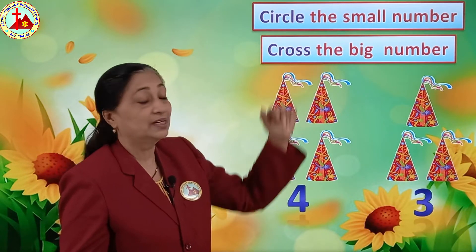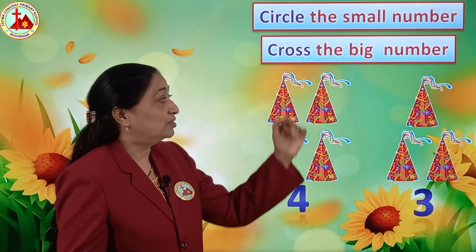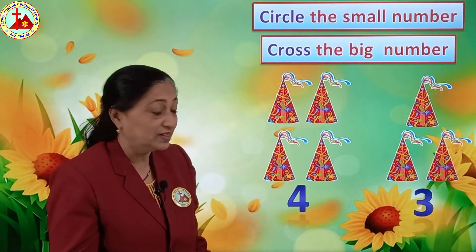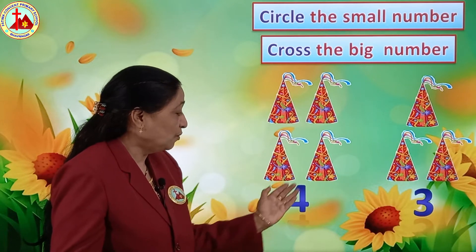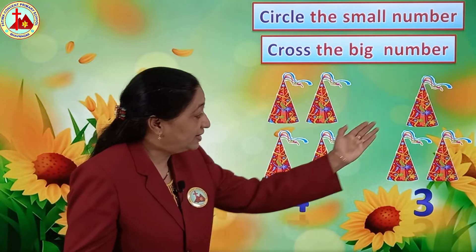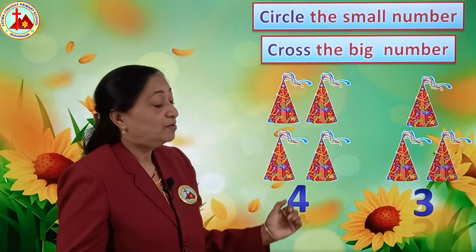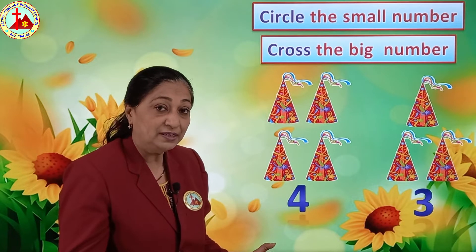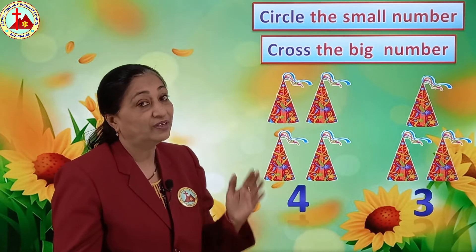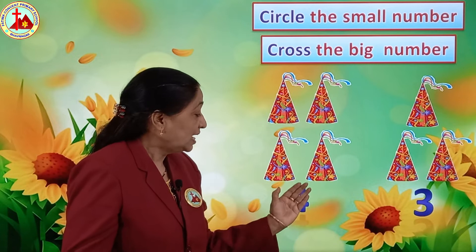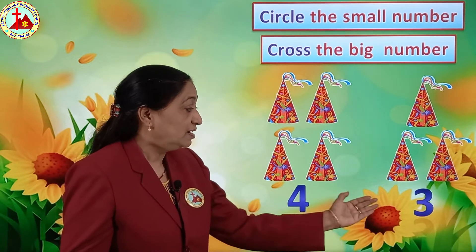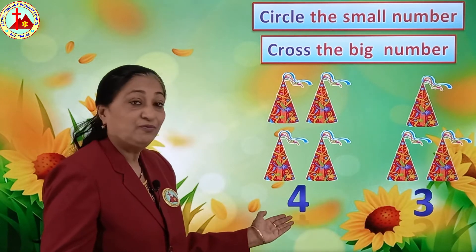We are going to circle the small number and cross the big number. See there are pictures here. Now we are going to count first: 1, 2, 3, 4. Here how many caps are there? 4. And here 3. Now can anyone tell me which is the big number and which is the small number? See, 4 comes after 3, so after numbers are always the bigger numbers. And 3 comes before 4, so 3 is a smaller number. So 3 is a small number and 4 is a big number.